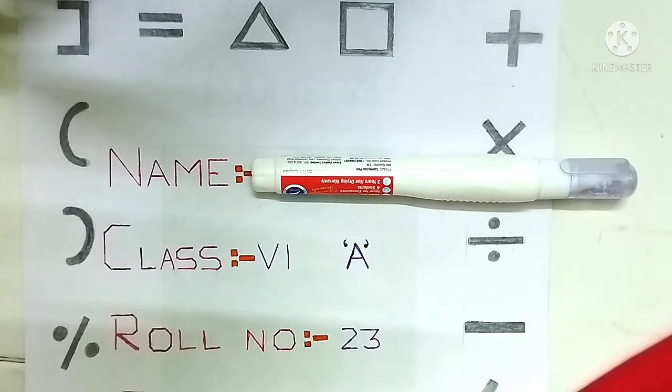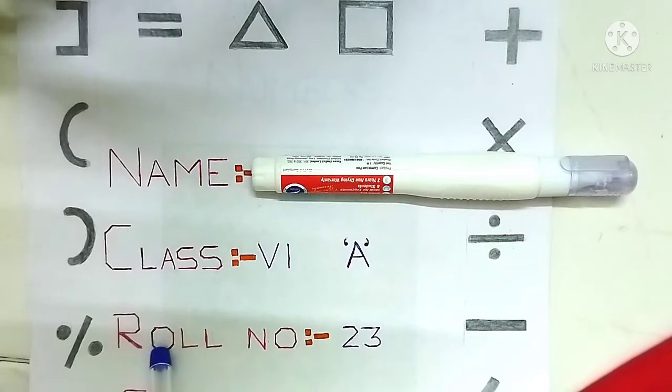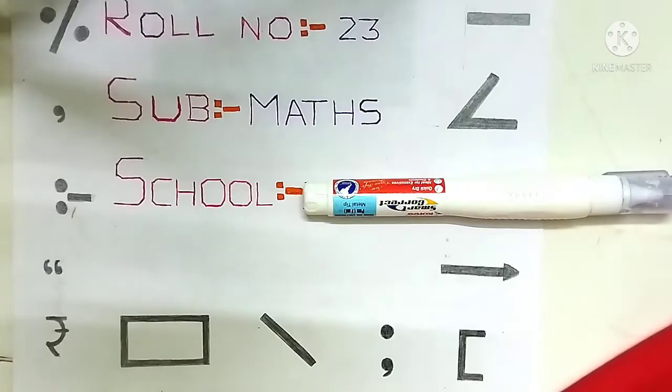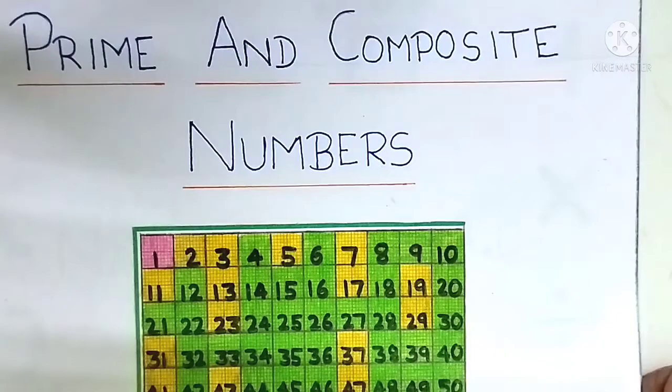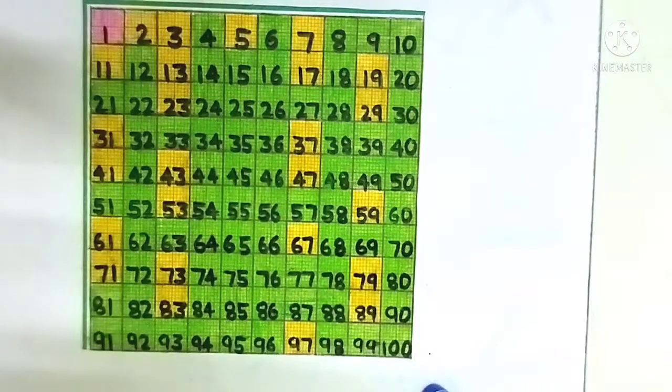Activity 4. Max, name, class, role number, subject, school. Prime and composite numbers. From 1 to 100 numbers.